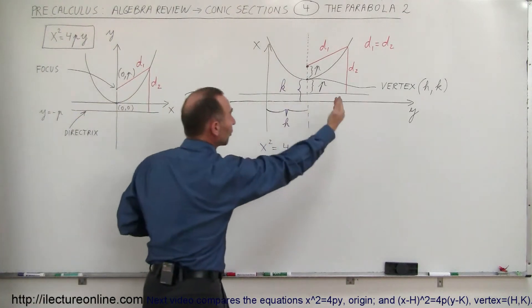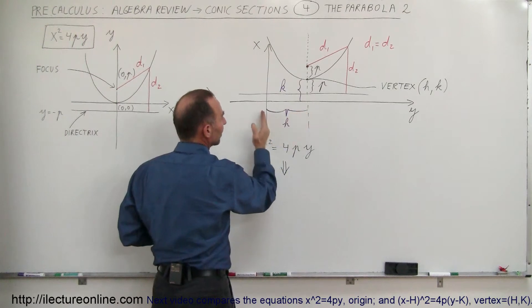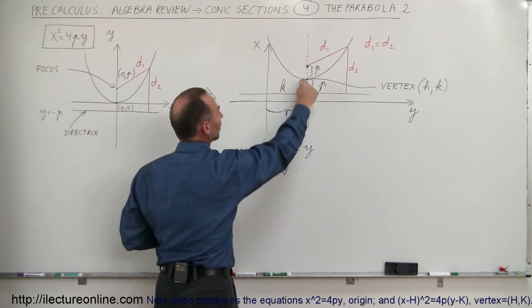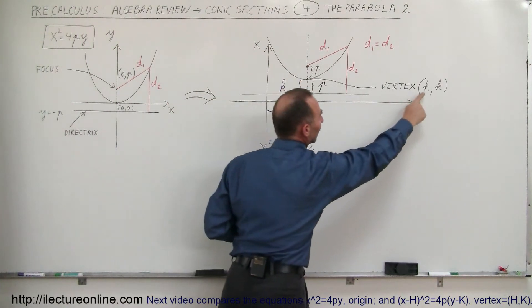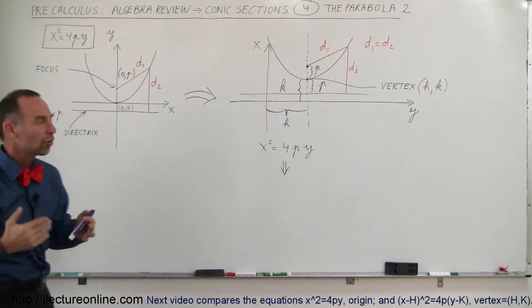So we've arbitrarily moved it to some different locations right here. The vertex is at this new location where the x value now is h and the y value is k, which means the vertex is now at (h,k). Those are the coordinates of the vertex. So how does that change our equation?